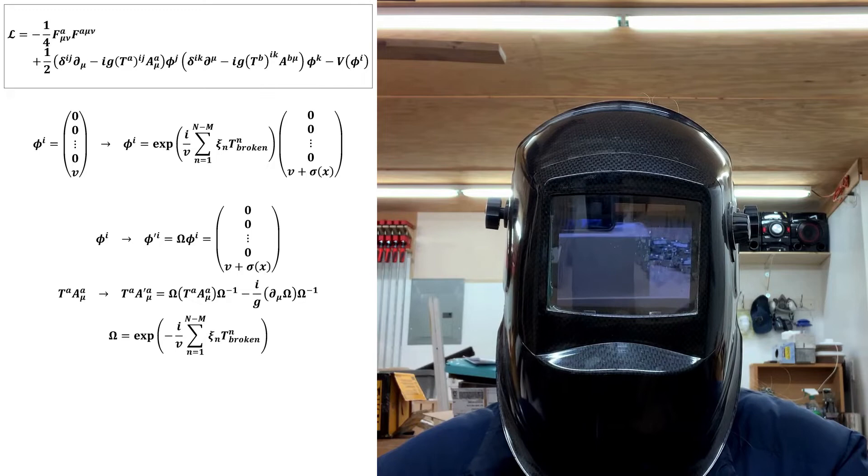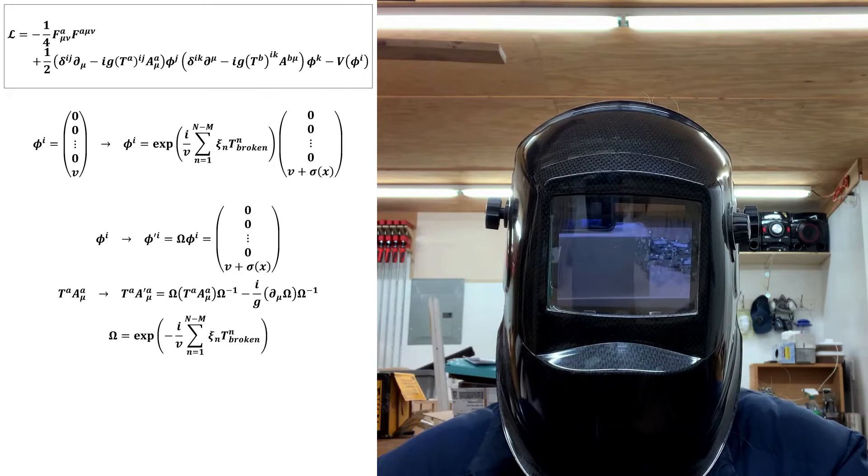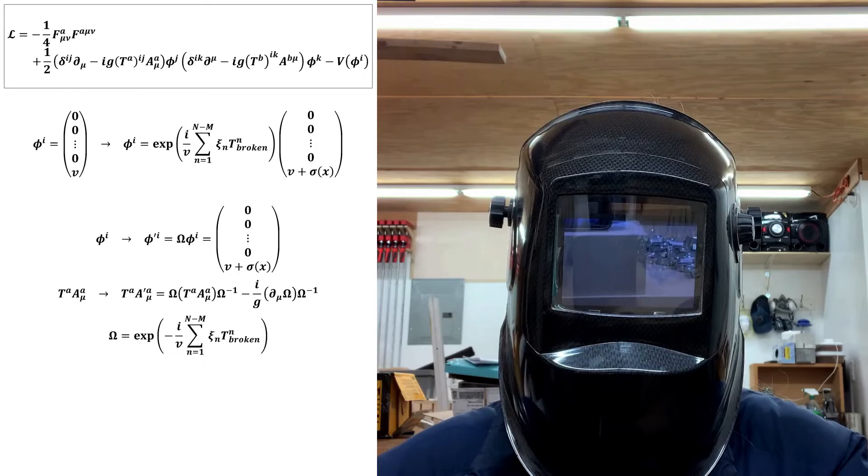It turns out that for an arbitrary O-N group, the number of degrees of freedom that are affected by the transformations in a given subgroup is equal to the number of generators not in that subgroup.